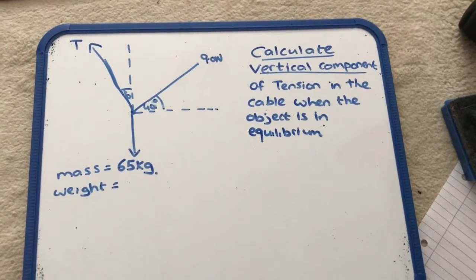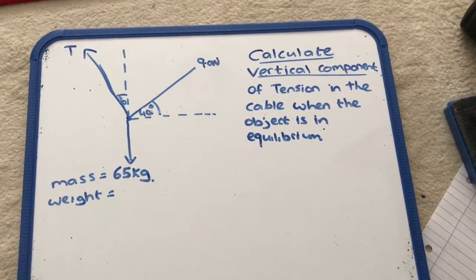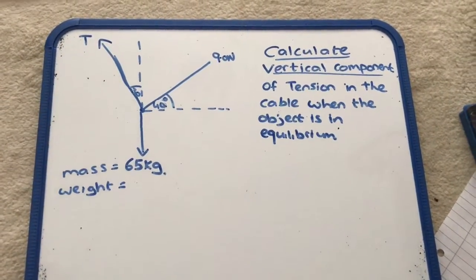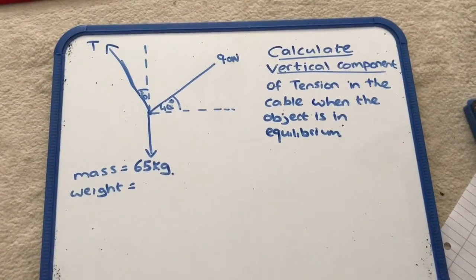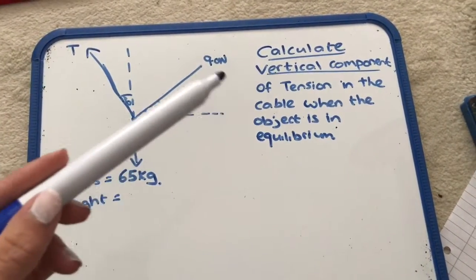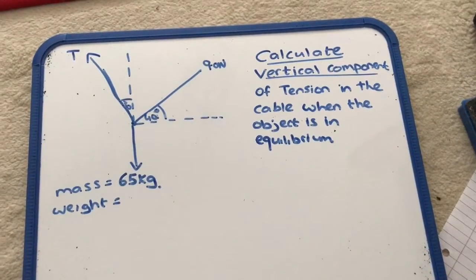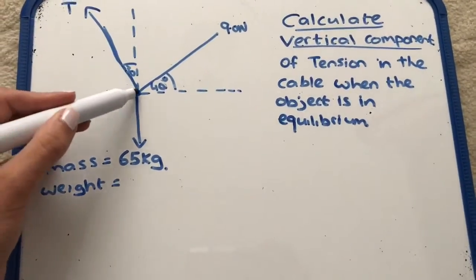Okay, so this is a vector question where we're looking at vectors that are acting at angles and just resolving them into their components. This first one here says calculate the vertical component of tension in the cable when the object is in equilibrium. So if we look at it here, we're just going to assume this is the object.